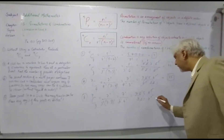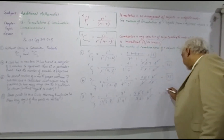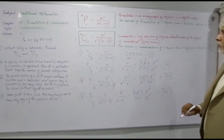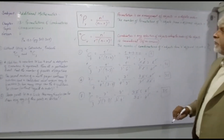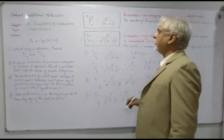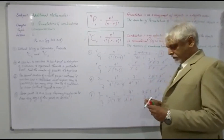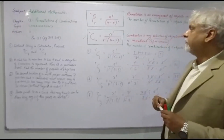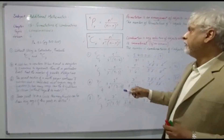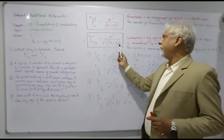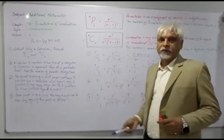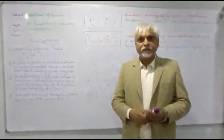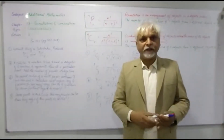Just remember for combination, the formula is: C(n, r) equals n factorial upon r factorial times (n minus r) factorial. I hope to see you in the next lesson — take care.